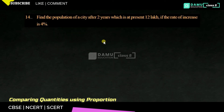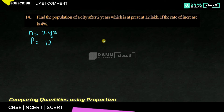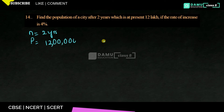Find the population of a city after 2 years, which is at present 12 lakhs, with a rate of increase of 4%. So n = 2 years, present population (principal) = 12 lakhs, and rate of increase = 4% compounded annually.